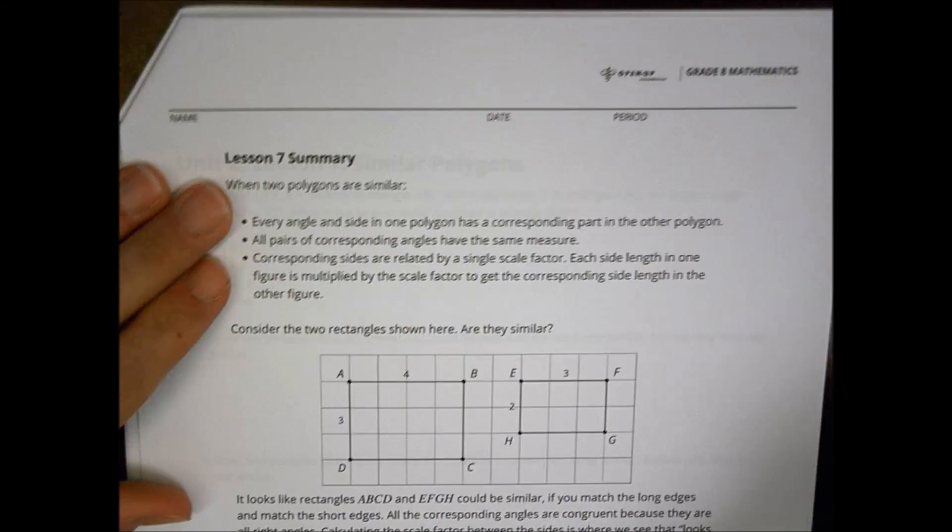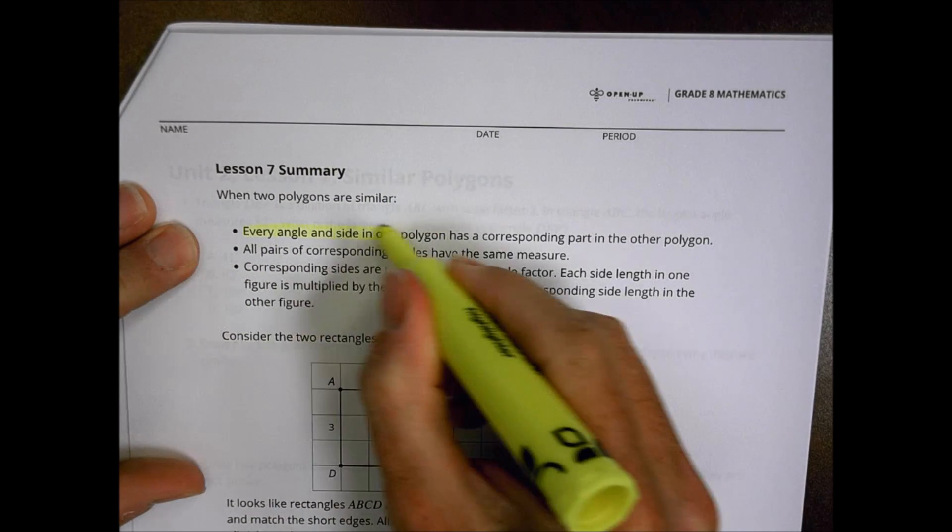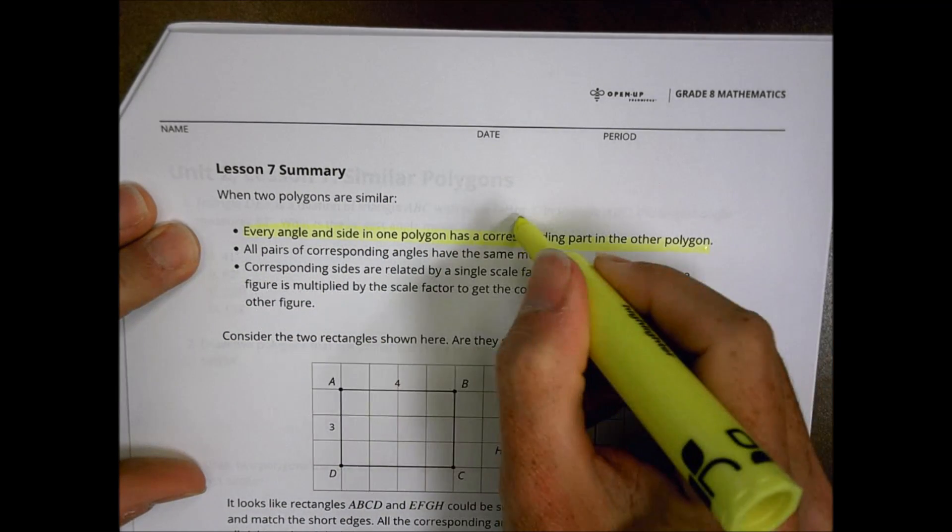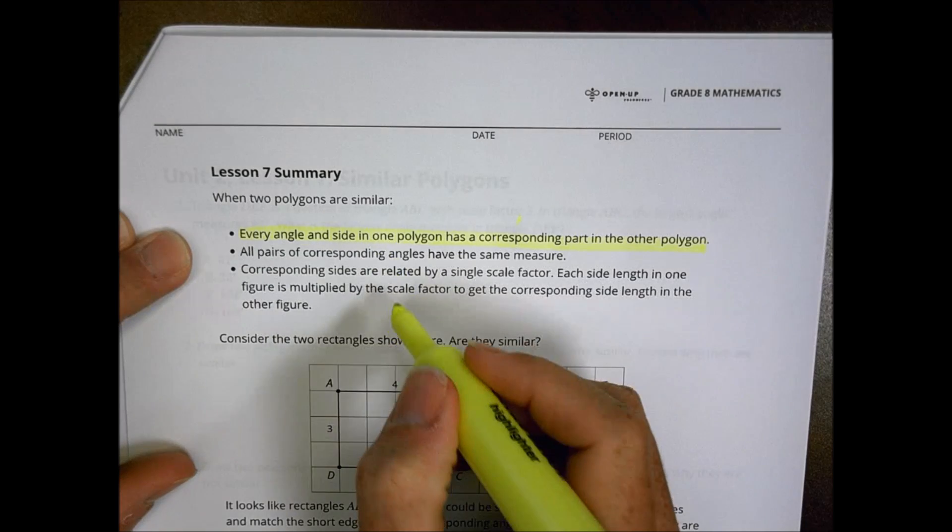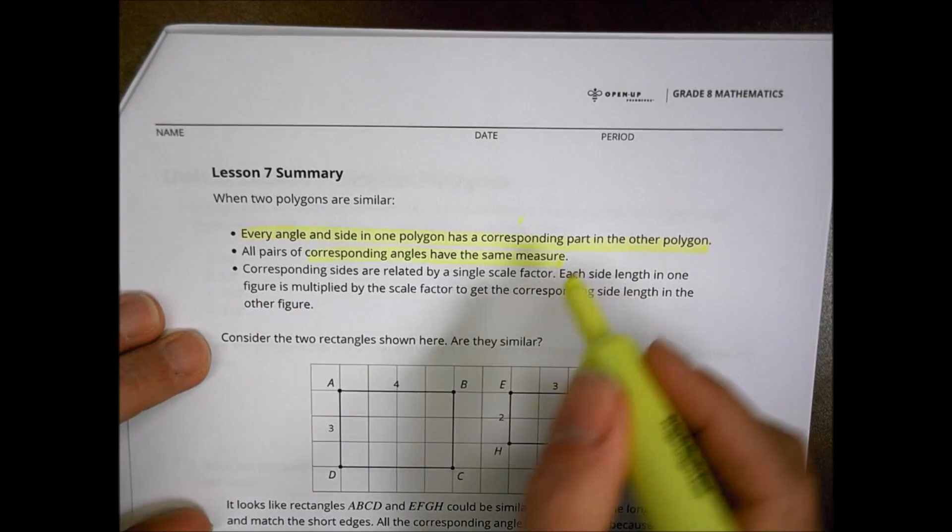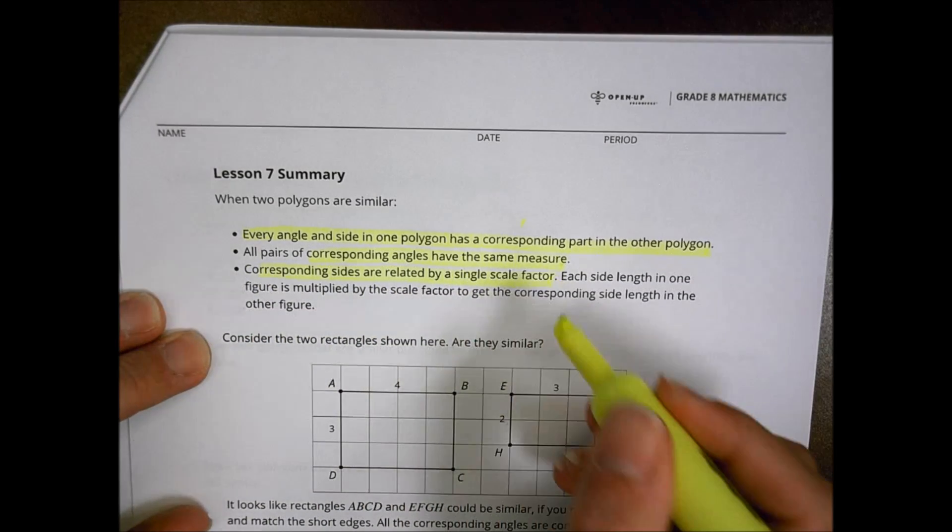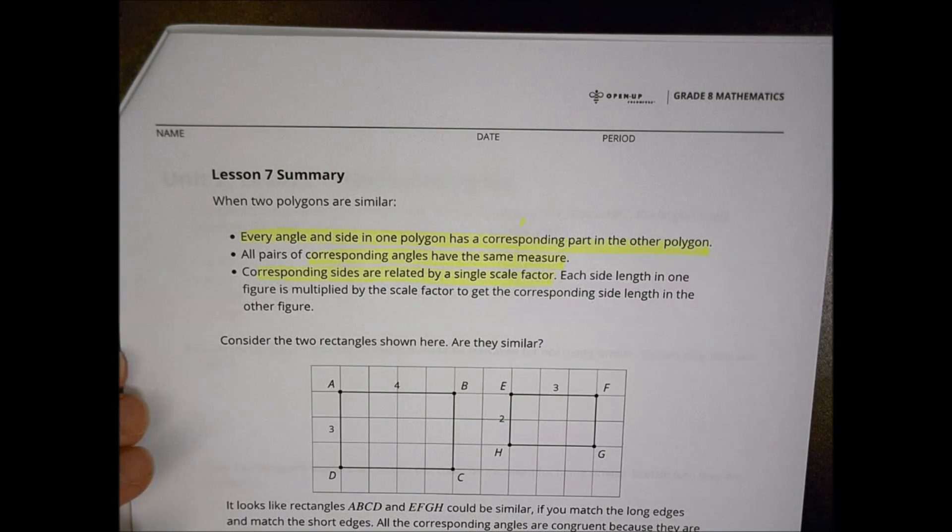So in summary for today's lesson, we would say that every angle and side in one polygon has a corresponding part in the other. All pairs of corresponding angles have the same measurements. And the corresponding sides are related by a single scale factor. You can't have multiple scale factors there.